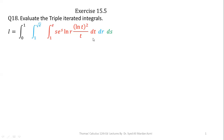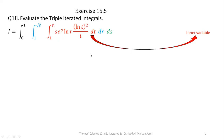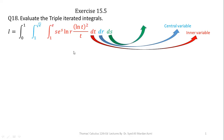Now, which limits belong to which variable and which variable is our initial variable for the process of integration — we will learn this. Here, t, which is written in the most inner side of the integral, is called the inner variable. The limits of t are 1 to e. The variable written in the center is called the central variable and its limits are 1 to square root of e. The variable written in the most outer side is called the outer variable, whose limits are 0 to 1.